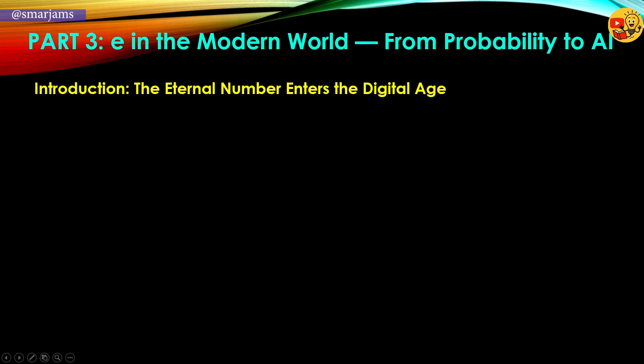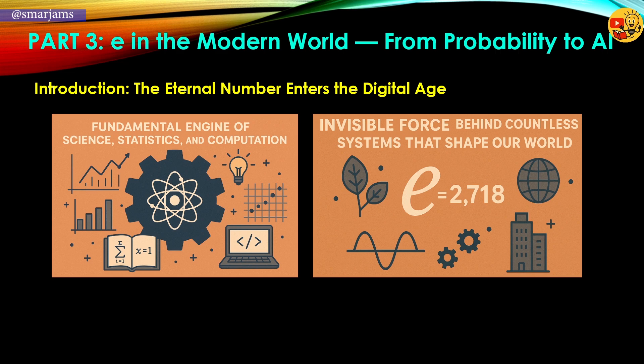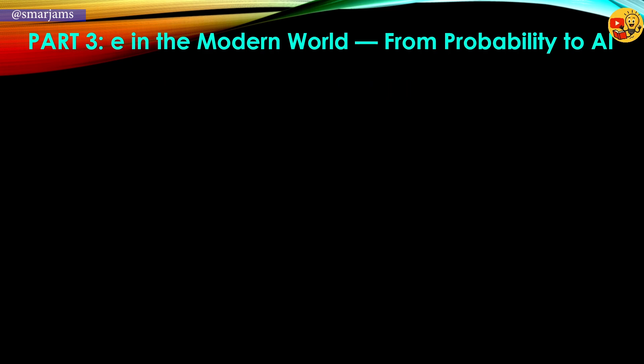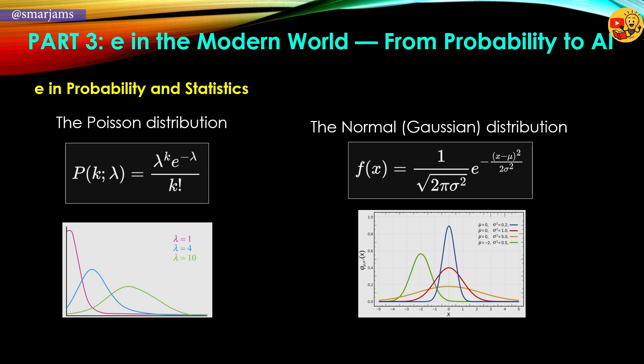After centuries of mathematical exploration, the number e evolved beyond its origins. Once born from compound interest and rigorously proven to be irrational and transcendental, e found new life in the digital era. It became an engine behind modern science, quietly powering the inner workings of probability, statistics, and information theory. In probability, e plays a central role in formulas like the Poisson distribution, where it models the likelihood of rare events such as radioactive decay, and in the iconic normal distribution, where exponential decay describes how values naturally cluster around the mean. This same graceful, symmetric fall-off is why e fits so naturally into the architecture of randomness.